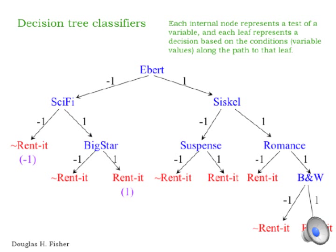Here's a simple example of a decision tree intended to represent movie renting behavior. Every internal node of the decision tree represents a test or a variable, and depending on the outcome of the test or the value of the variable, you take an appropriate branch.